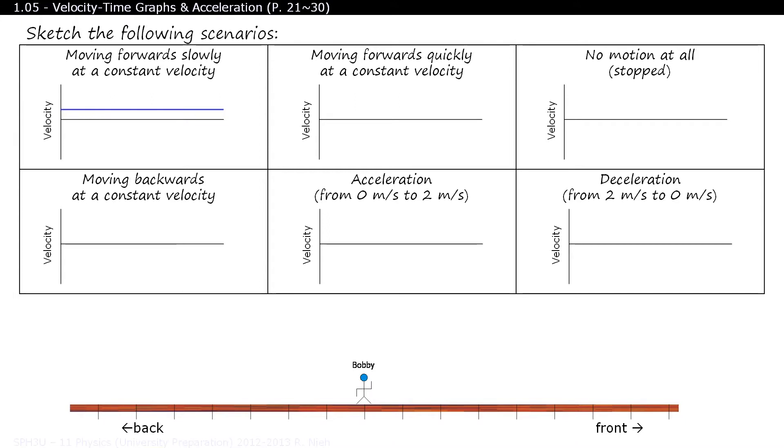Alright Bobby, can you bring it up a notch? The plot still creates a horizontal line, but this time the y-intercept is much further up, as Bobby is traveling much faster.